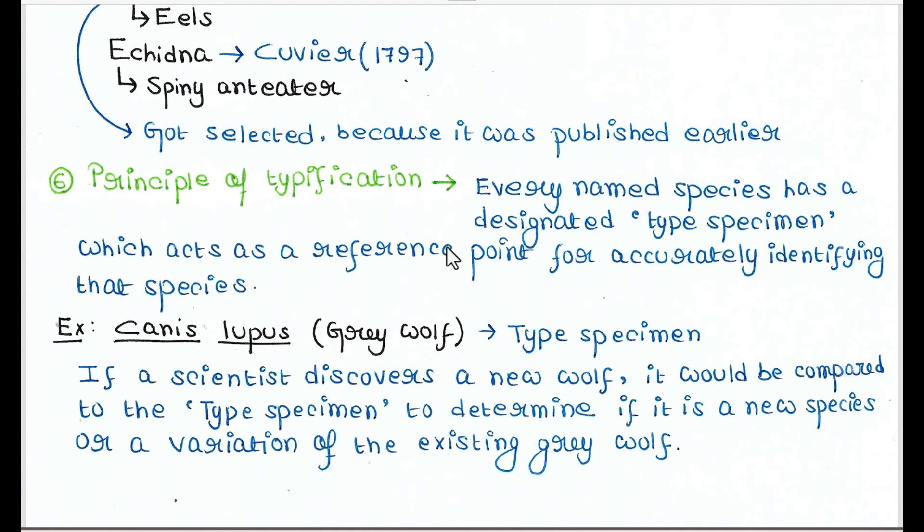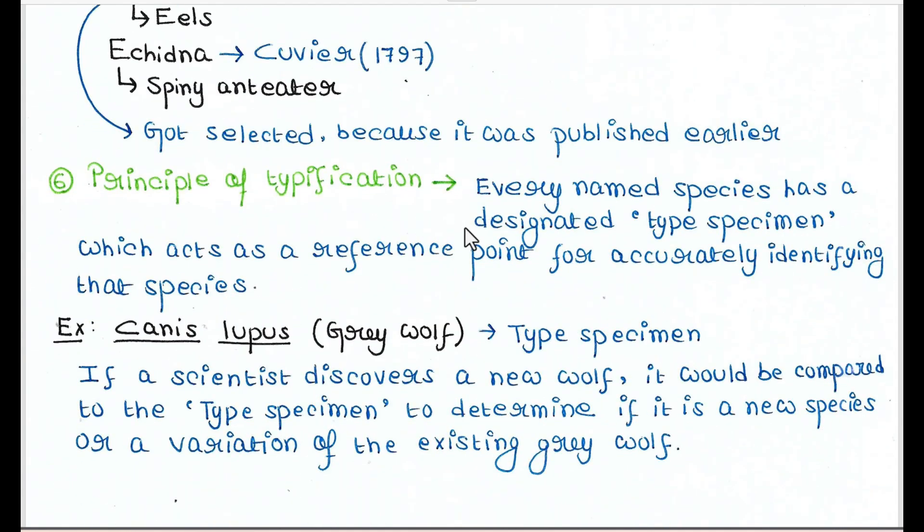And the last principle is principle of typification. So every named species has a designated type specimen which acts as a reference point for accurately identifying that species. For example, the scientific name of gray wolf is Canis lupus and this is the type specimen. That means if a scientist discovers a new wolf, it would be compared to the type specimen to determine if it is a new species or a variation of the existing gray wolf.